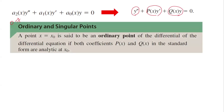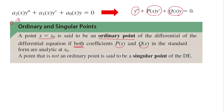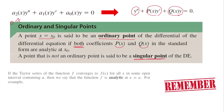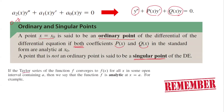We define ordinary and singular points. A point x = x₀ is said to be an ordinary point of the differential equation if both coefficients p(x) and q(x) are analytic at x₀. Otherwise, we call it a singular point. If the Taylor series of function f converges to f(x) for all x in some open interval containing a, then we say that f is analytic at x = a.